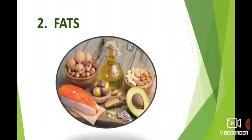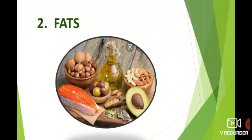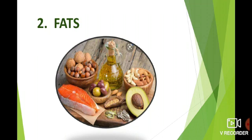Next, we learn about the 2nd component of food: fat. Fat is also an energy-giving food and provides more energy than carbohydrates. Fat helps to protect the cells in our body. Fat is also a complex food substance and during digestion it breaks down into simple substances such as lipids and cholesterol.